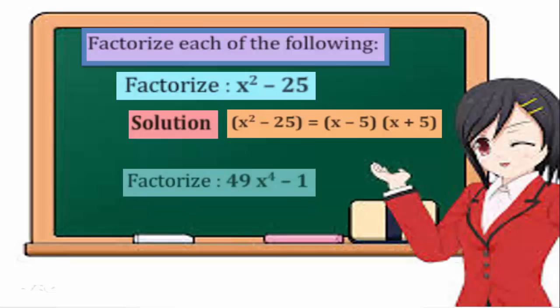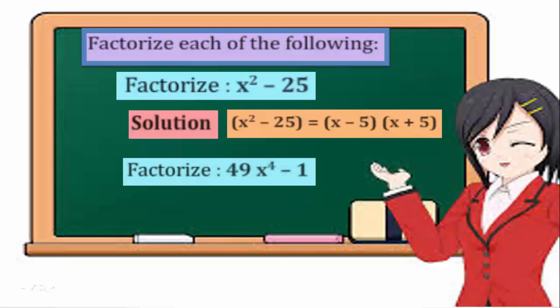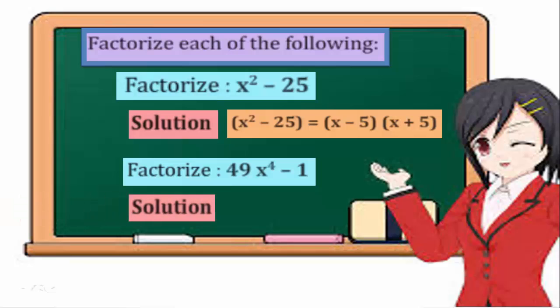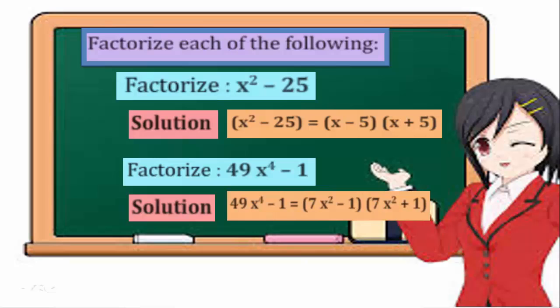Example 2: Factorize 49x to the power 4 minus 1. Solution: 49x to the power 4 minus 1 equals a bracket of 7x squared minus 1 times a bracket of 7x squared plus 1.